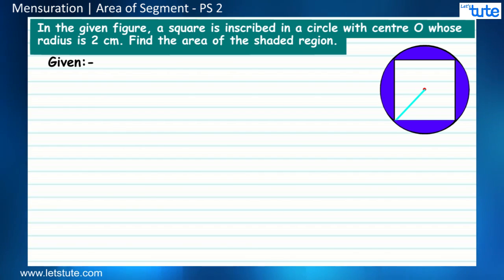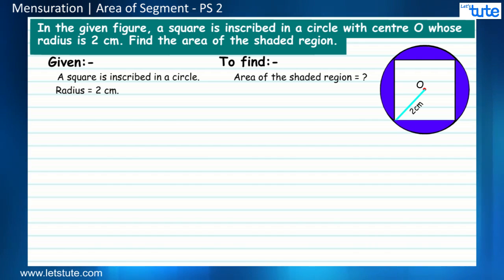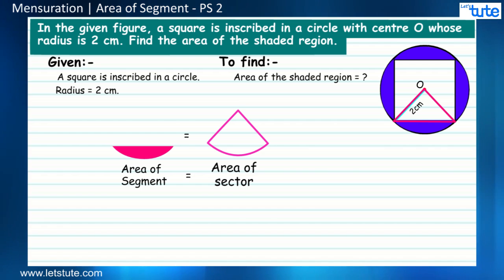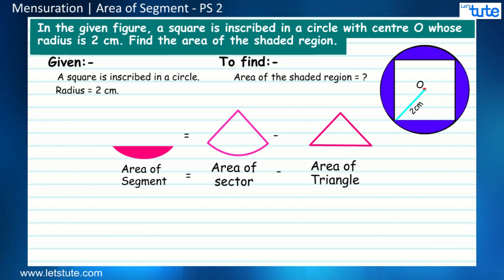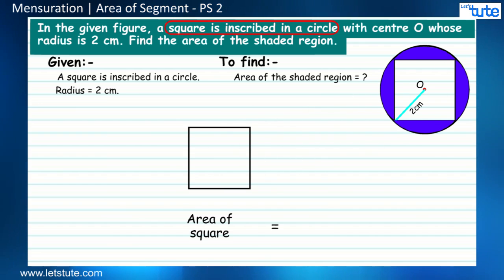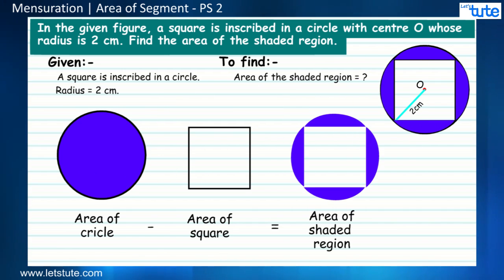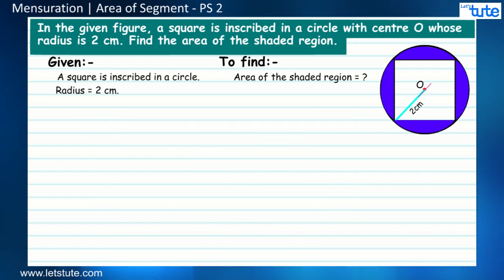Now let's take a different problem. In the given figure, a square is inscribed in a circle with center O whose radius is 2 centimeters. Find the area of the shaded region. Here there are four shaded regions and we only have the information about the radius. Since a square is inscribed in a circle, if we subtract the area of the square from that of the circle, we will get the area of all four shaded regions.